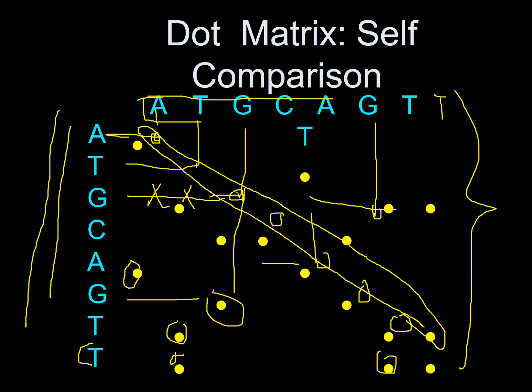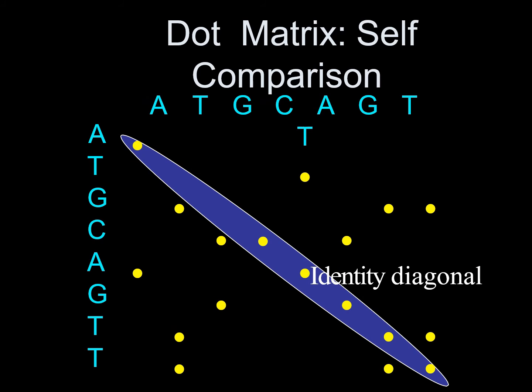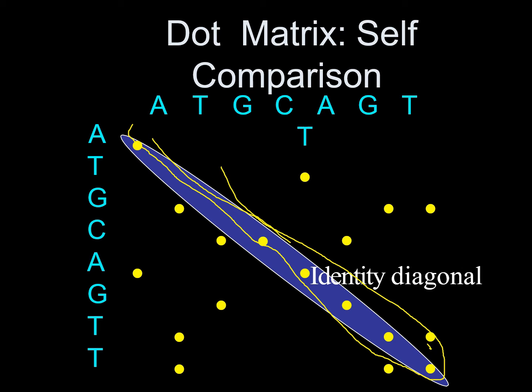As you can see, we found pretty much similar sequences at this point in this range, and we've demarcated this area with an identical diagonal. This identical diagonal shows that these two sequences are pretty much similar. There are other dots as well which point to similar regions.